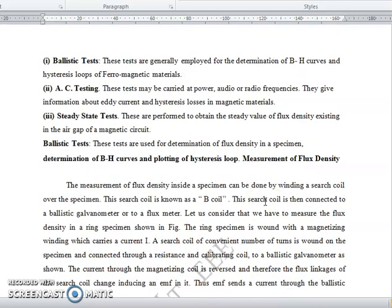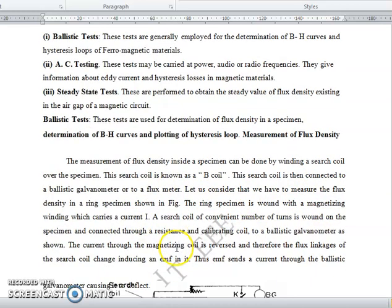Measurement of Flux Density: The flux density inside the specimen can be done by winding a search coil over the specimen. This search coil is called as B-coil. This search coil is connected to the ballistic galvanometer or flux meter. Let us consider we have to measure the flux density in the ring specimen as shown in the figure.